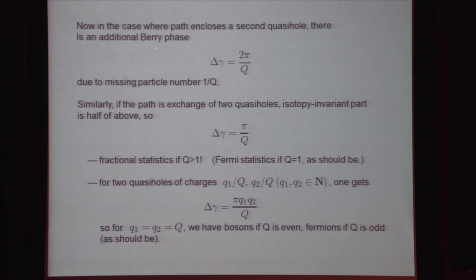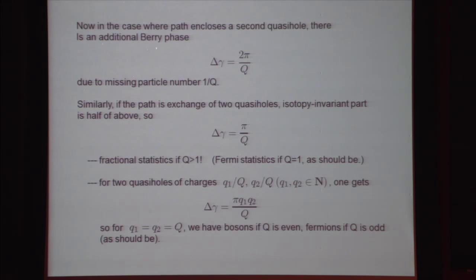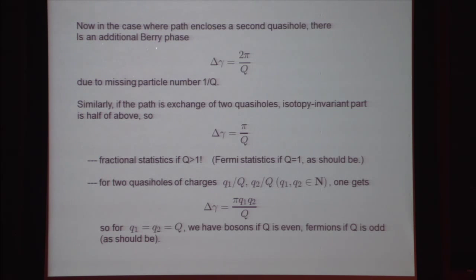If I take two quasi-holes and exchange them twice, that's equivalent up to isotopy — smooth deformation of curves without intersection — to keeping one fixed and moving the other one all the way around it. Therefore I'm entitled to divide this Berry phase by two and get the statistics phase for an exchange, which is pi over Q.